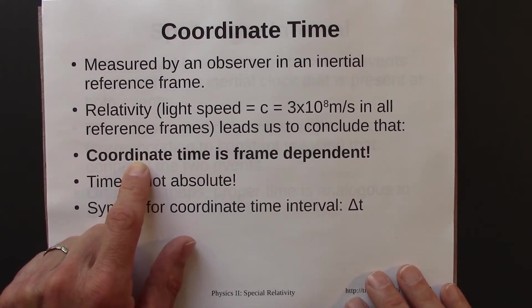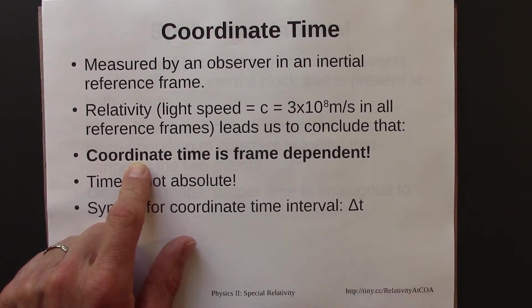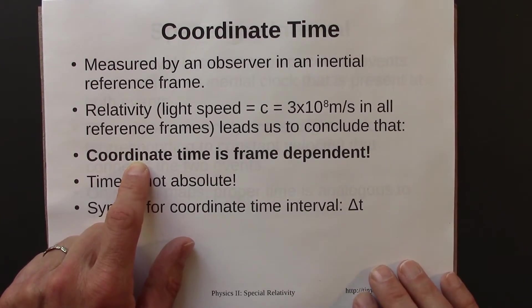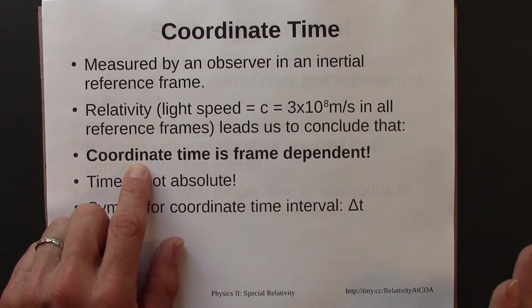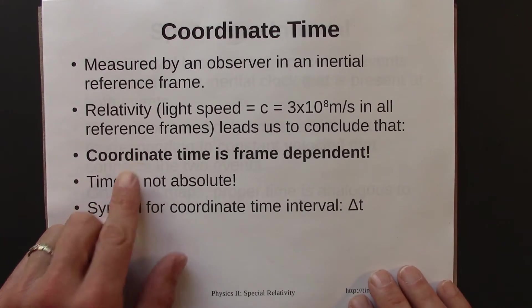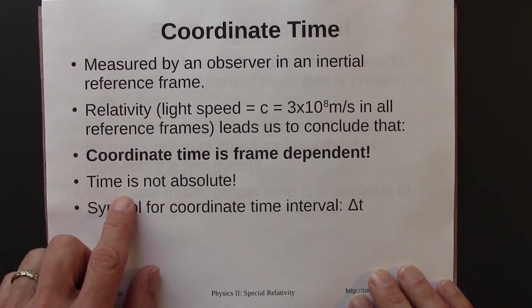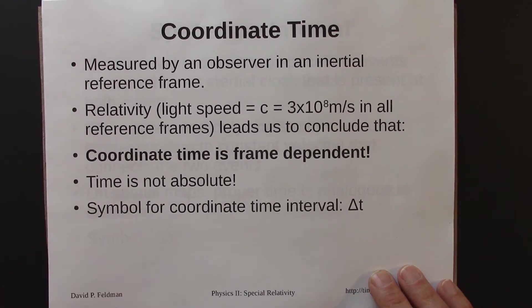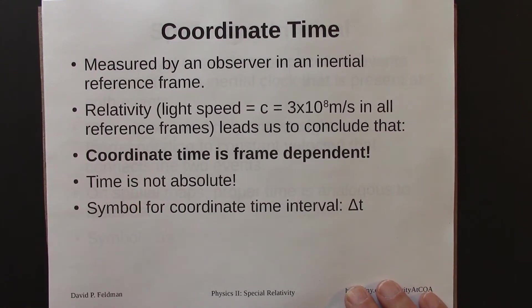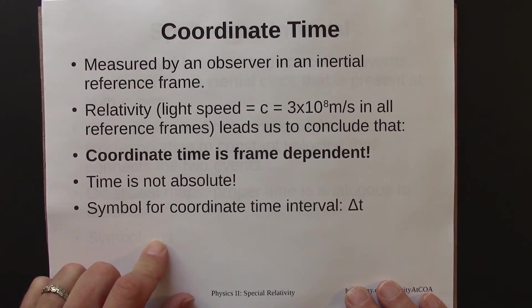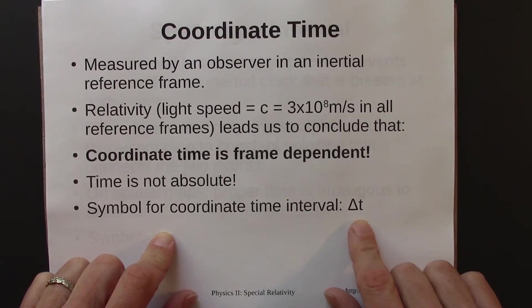In the first example, we saw one observer in one reference frame saying these events are simultaneous, and another observer in a different reference frame saying no, they're not simultaneous at all. So coordinate time is frame dependent — time is not absolute. Observers in different reference frames disagree on coordinate time intervals, and the symbol for coordinate time interval is usually delta t.